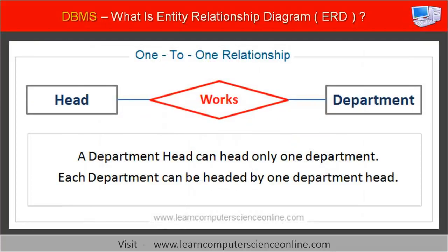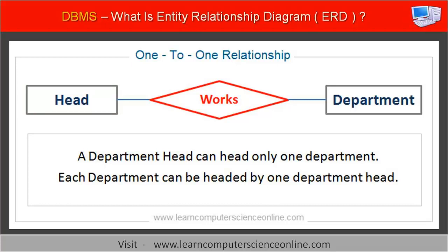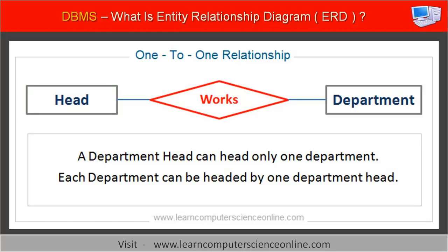In a one-to-one relationship, only one instance of entity set A can be associated with any one instance of entity set B, and vice versa. For example, in a college, a department head can head only one department. Similarly, each department can have only one department head.